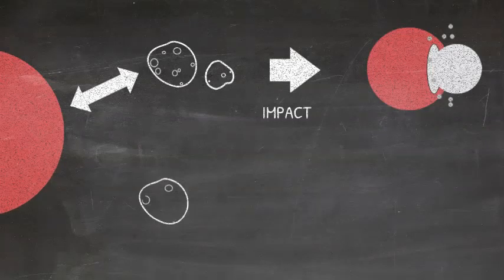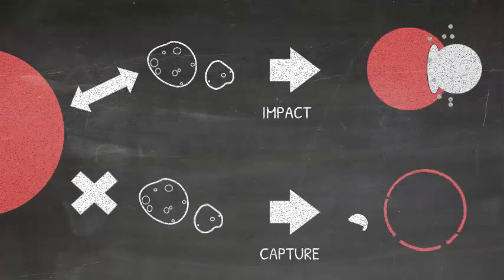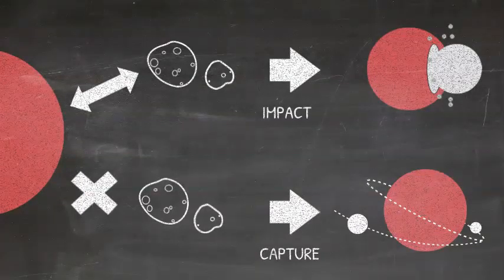But if the moon's composition is different from the planet, then they likely formed in a different part of the solar system and are captured asteroids.